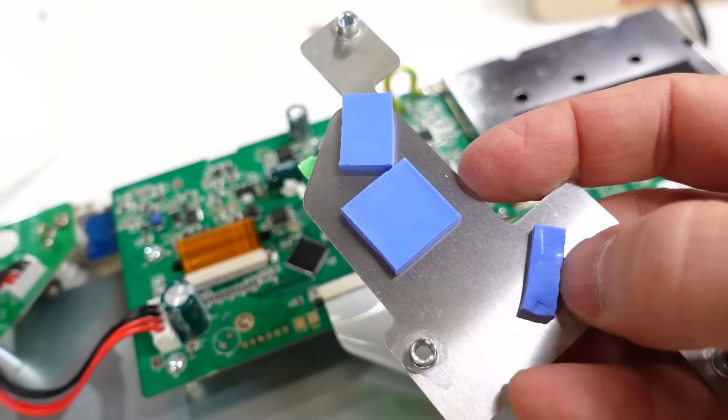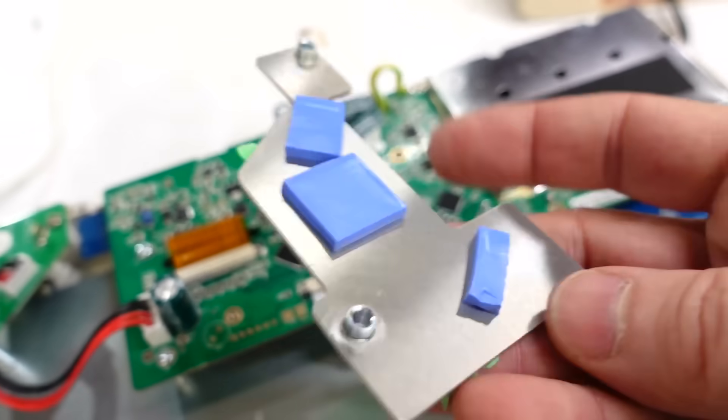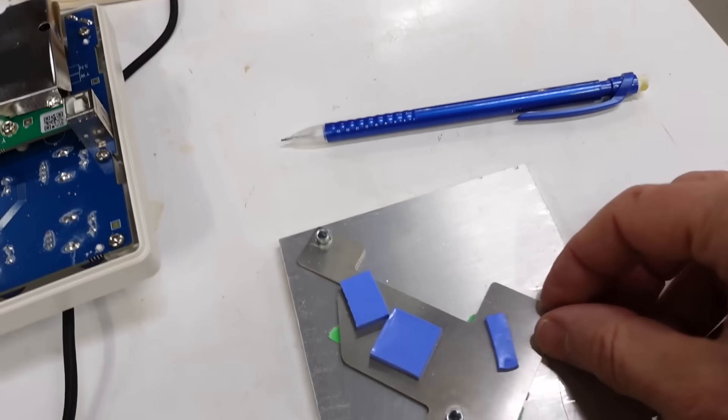So if I made some standoffs to go on here they wouldn't be so thick anymore. Or I could just make a whole new heat sink.